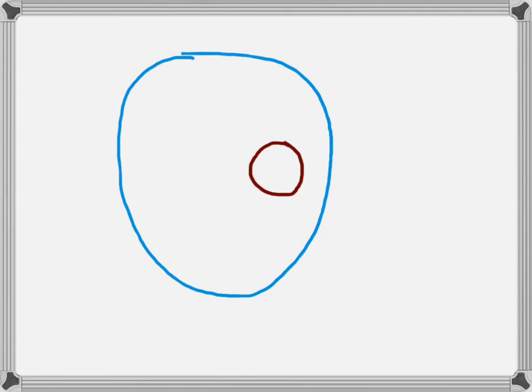Here we have the cell and a large particle right here. This particle needs to go out. Obviously, if a particle is being removed, we're going to be using exocytosis.